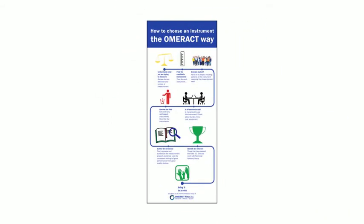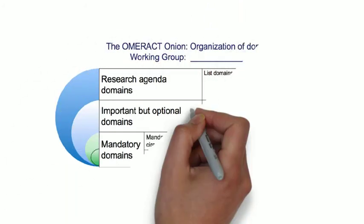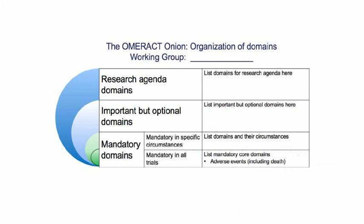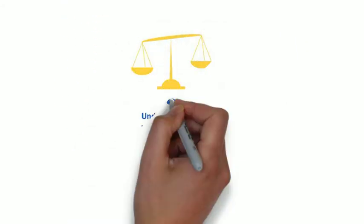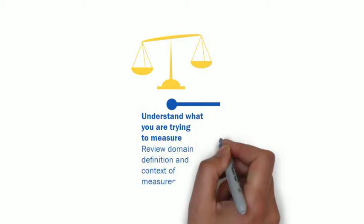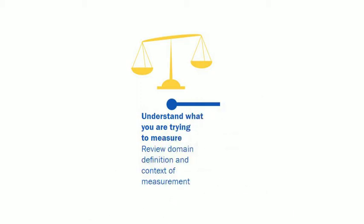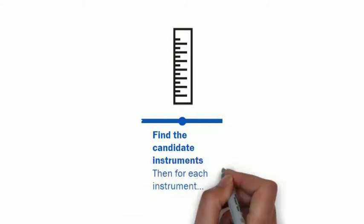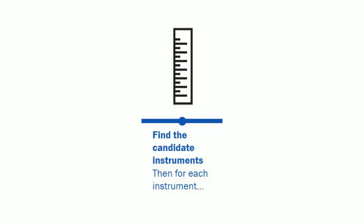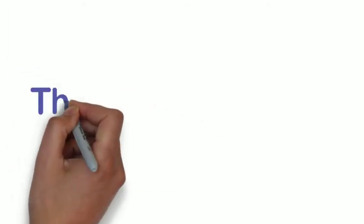The first step in the OMRACT Way of Instrument Selection is for the working groups to revisit the definition of the domain as found in the OMRACT onion. Working groups think about the intended context of use of the instrument they wish to evaluate in terms of the patients, interventions, and factors like access to care or living circumstances that might influence the domain. Candidate outcome measurement instruments are identified by the working group through a literature review or knowledge of what is being used in current research.